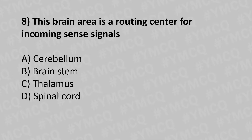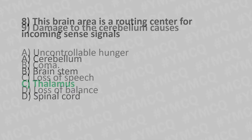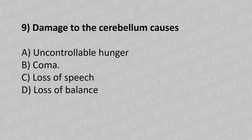Moving to our eighth question. This brain area is the routing center for incoming sensory signals. Option A: cerebellum. Option B: brainstem. Option C: thalamus. Option D: spinal cord. And the answer is option C: thalamus.